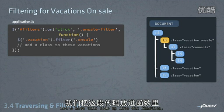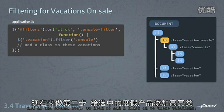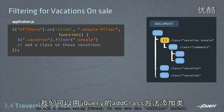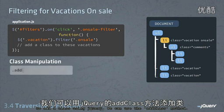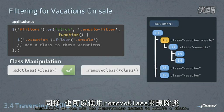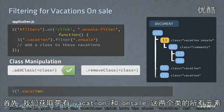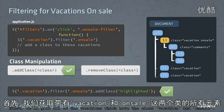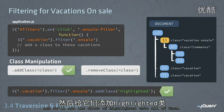Let's move this code up into our function. The second step is to add a class onto these vacations. To add a class using jQuery we can use the addClass method, and similarly we can use the removeClass method to remove a class. So first we'll grab all of the vacations which have the classes vacation and on-sale, and we'll add the class of highlighted onto all of them.